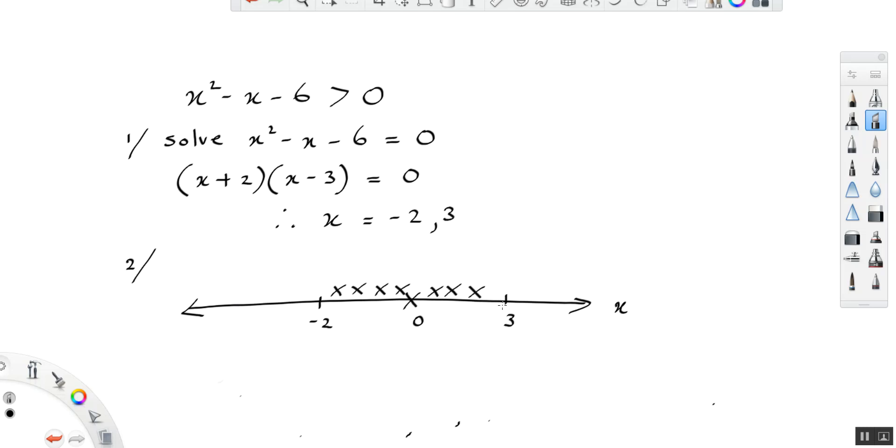Now, let's test a value greater than 3. We know that at 3, x squared minus x minus 6 is equal to 0. So we want values that are greater than 0. Let's try a different value. Let's try 10, for example.